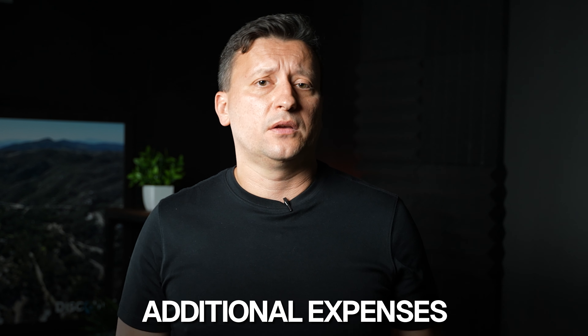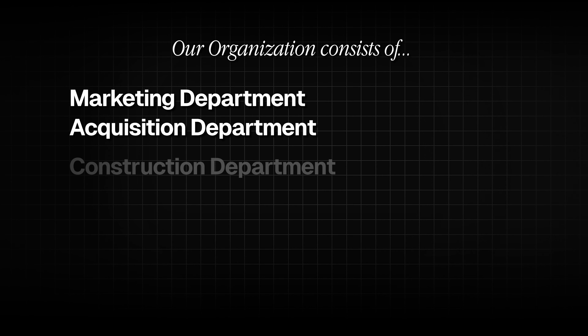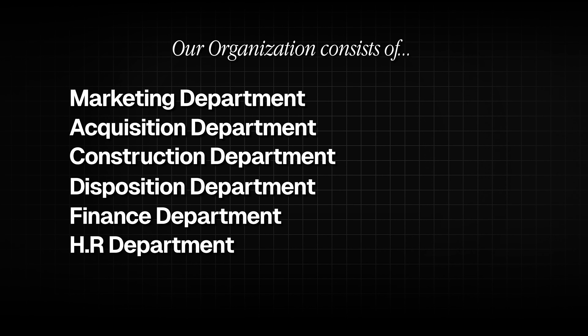You're also going to have additional expenses — if you have an assistant, a disposition manager, or later an acquisition manager. In our organization, we've done over 3,000 homes and our target is somewhere between 300 to 400 homes per year across three markets. Our organization has many departments: marketing, acquisition, construction, disposition, finance, HR. Those expenses add up and the math changes because of G&A and legal expenses. But if you're a solo entrepreneur, this number should work for you.